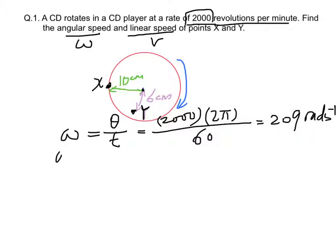The angular speed at point x and at point y are the same, which means they have the same value, equal to 209 radians per second.